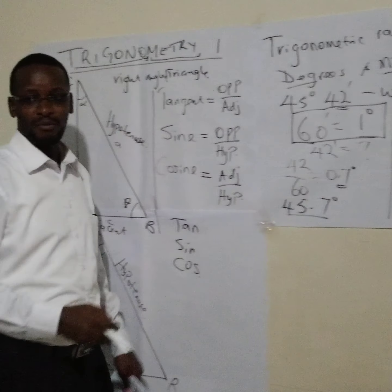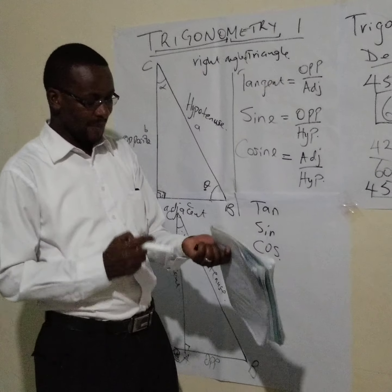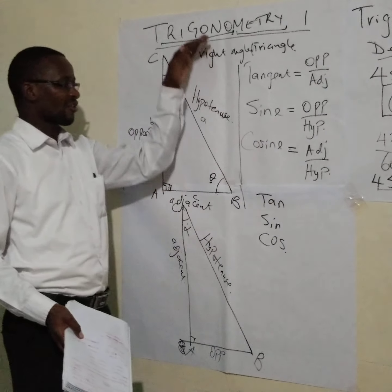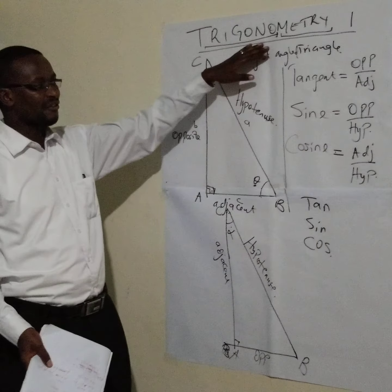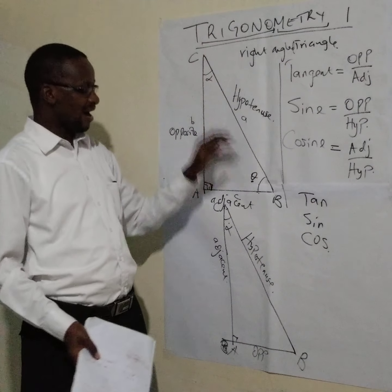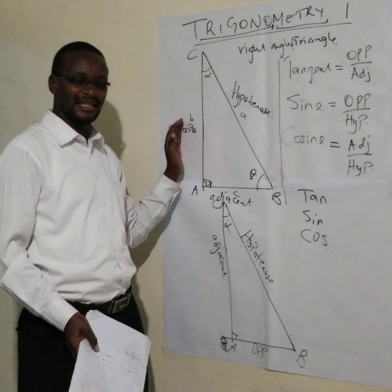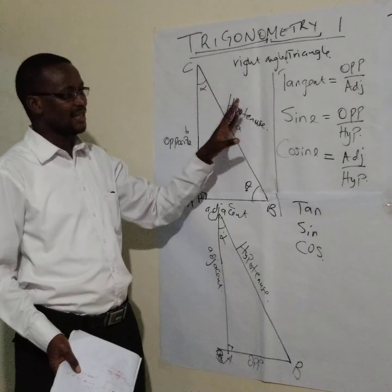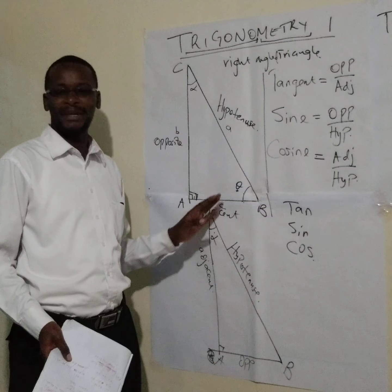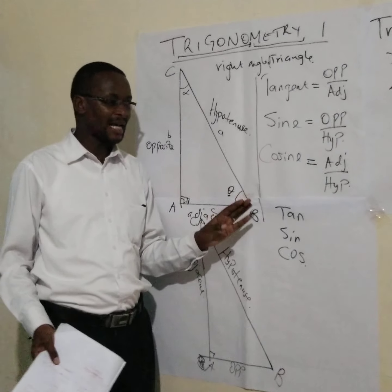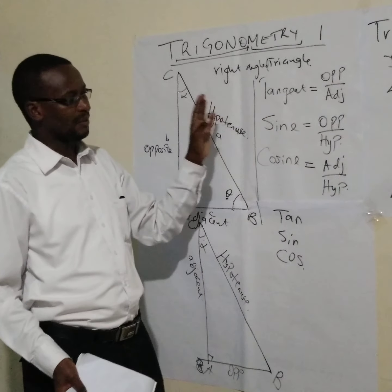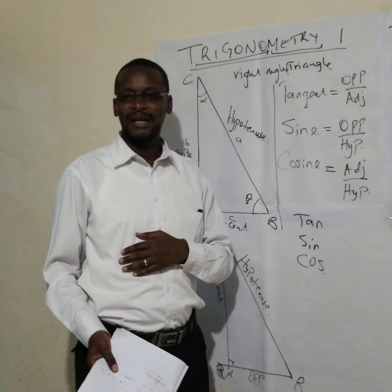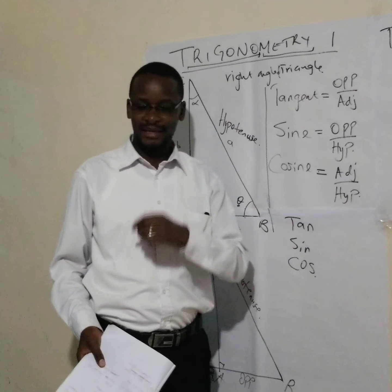I'll give you an assignment on this, and we will do more on trigonometry, having known that trigonometry is the branch of mathematics that relates the angles and the sides of a triangle — and in our case, we are dealing with a right-angled triangle. So welcome to this topic. It will be as simple as that, and I hope it will be a journey that we can walk together. Thank you. That is the end of today's lesson.